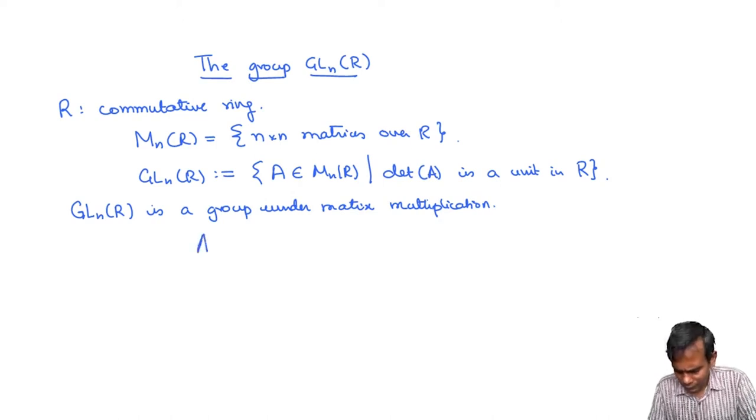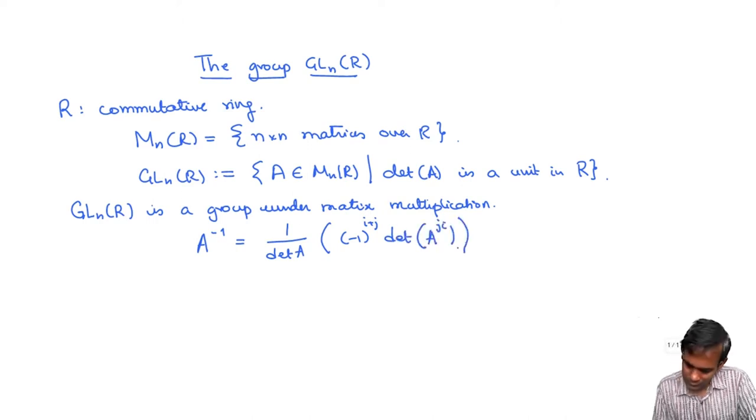But for that we can use the well-known formula for the inverse of a matrix. It's 1 over determinant A times the matrix whose ijth entry is minus 1 raised to i plus j times determinant of A subscript ji. So let me just explain what this means.